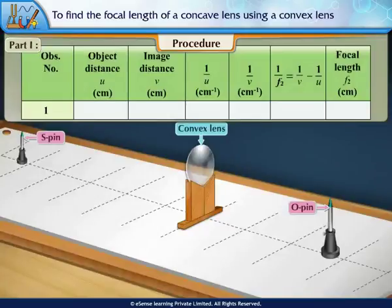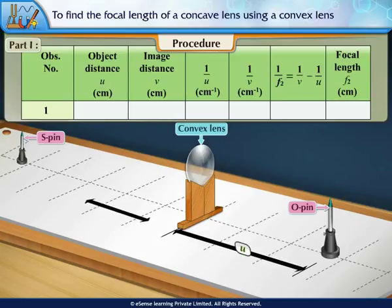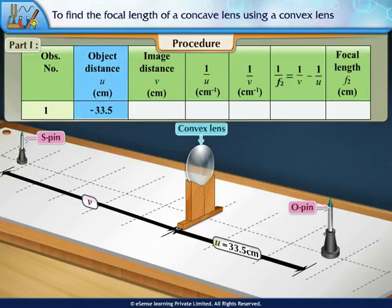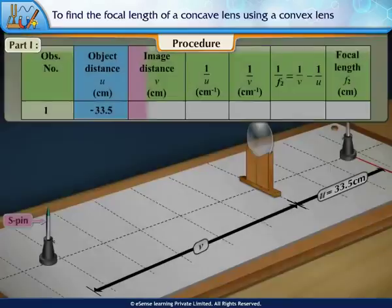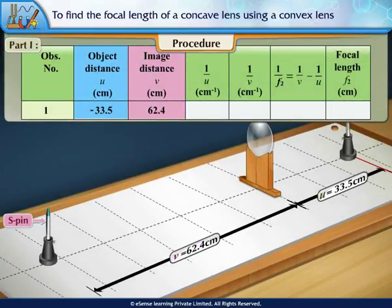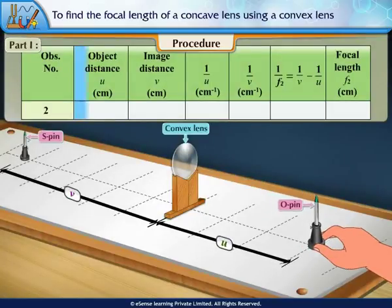Measure the distances of the O-pin and S-pin from the lens as the object distance U and image distance V respectively. They are U = 33.5 cm and V = 62.4 cm respectively. Repeat for two more values of U.